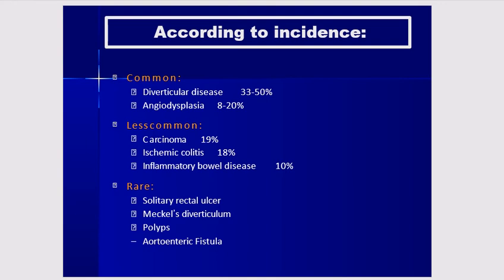The most common causes of lower GI bleed are angiodysplasia on the right side and diverticular disease on the left side. Less common causes include carcinoma, ischemic colitis, and inflammatory bowel disease including Crohn's and ulcerative colitis. Rare causes include solitary rectal ulcer, Meckel's diverticulum, polyps, and aortoenteric fistula.